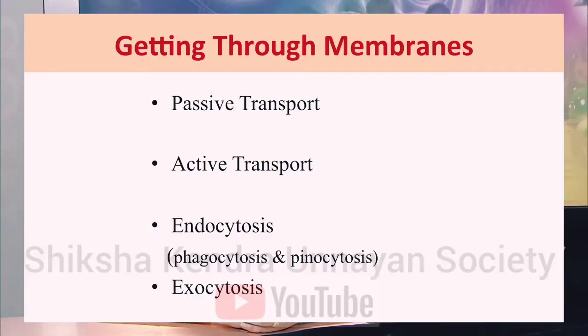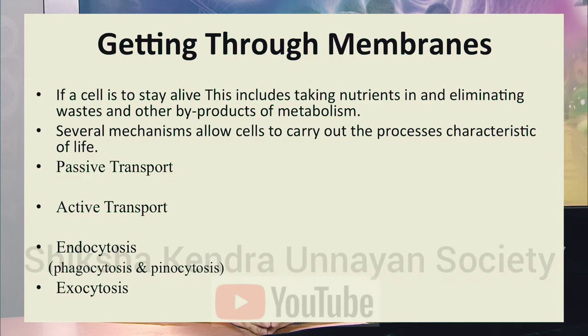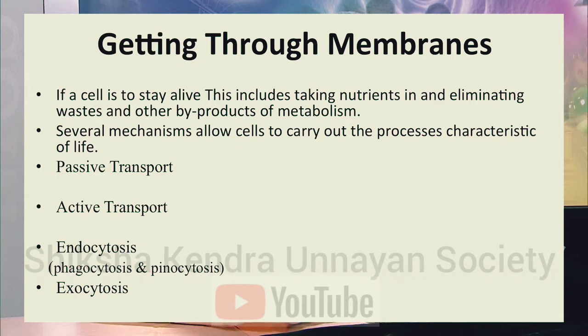So far, we have covered what cells are, the number of organelles present, and how cells are differentiated from one type to another. The next question is: how many molecules can enter and exit a cell? There are a number of mechanisms through which molecules can move into and out of the cell, including passive transport, active transport, endocytosis, and exocytosis. These mechanisms are required because cells must take in nutrition and eliminate waste products and byproducts of metabolism.